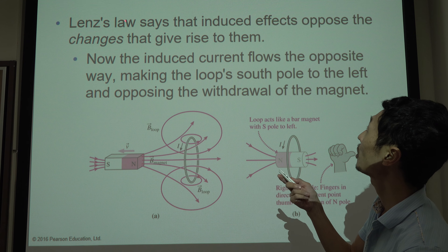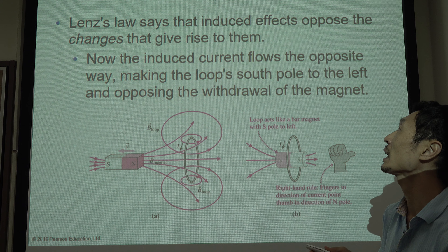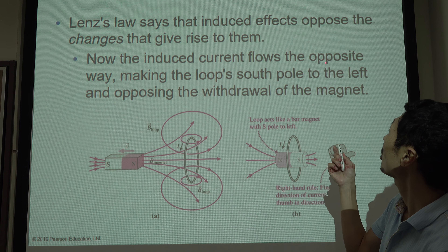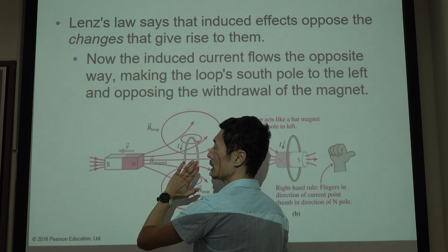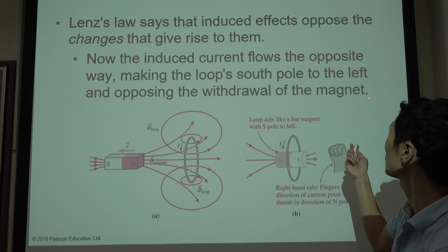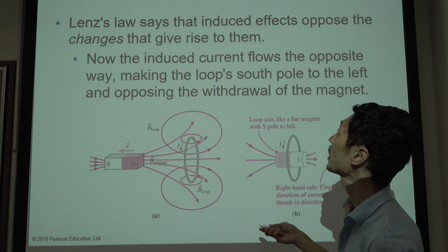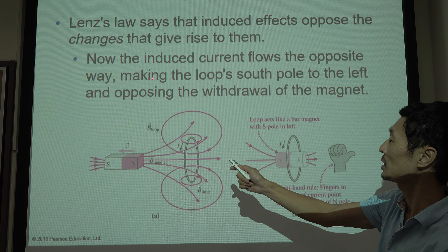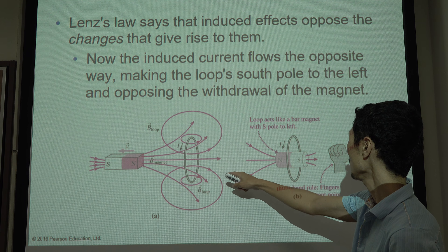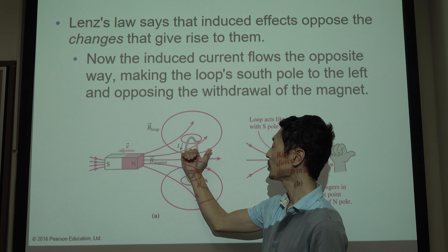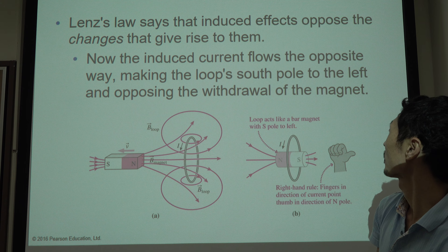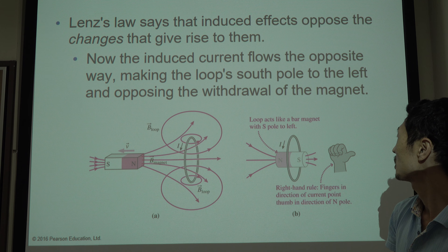Lenz's law says that induced effects oppose the changes that give rise to them. In the other case, the induced current goes the opposite way — the north pole is going away from the circuit, making a south pole to the left to oppose the withdrawal of the magnet. Lenz's law says: oppose the change. If north is going away, we want south here. From the right-hand rule, the south is here, north is the other way, so the current goes this way.